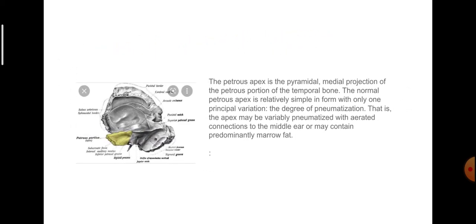The petrous apex is the pyramidal medial projection of the petrous part of the temporal bone. The normal petrous apex is relatively simple in form with only one principal variation: the degree of pneumatization. The apex may be variably pneumatized with aerated connections to the middle ear, or may contain predominantly marrow fat.